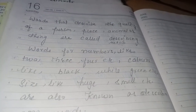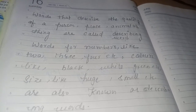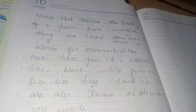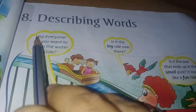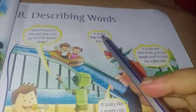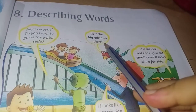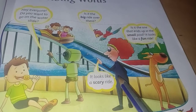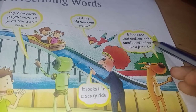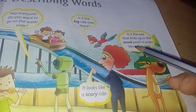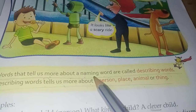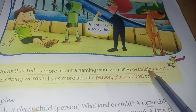Describing words tell us more about naming words. They tell us more about a person, place, animal and thing. Now let's see a conversation. 'Hey everyone, do you want to go on the water slide?' 'Is it the big ride over there?' 'It looks like a scary ride.' 'Is it the one that ends up in the small pool?' 'It looks like a fun ride.' Words that tell us more about a naming word are called describing words.